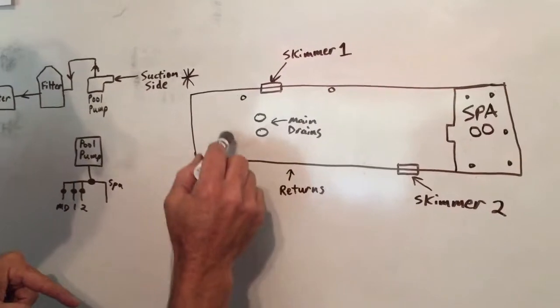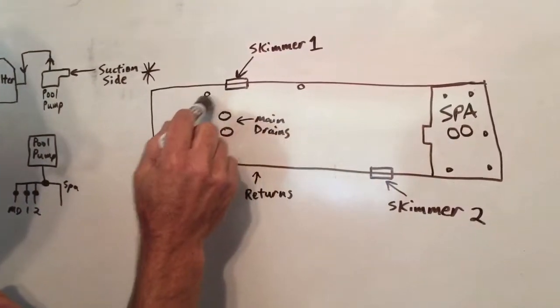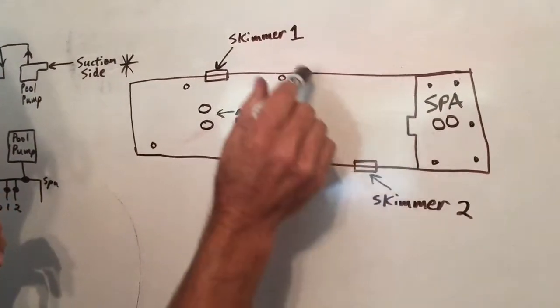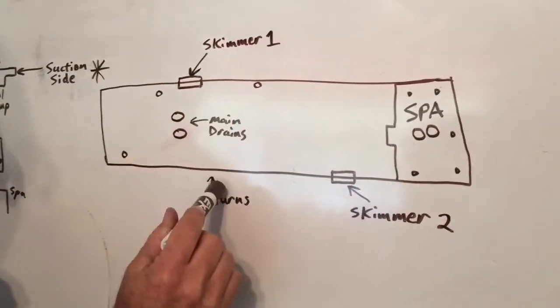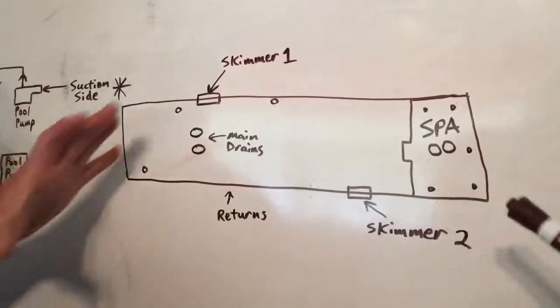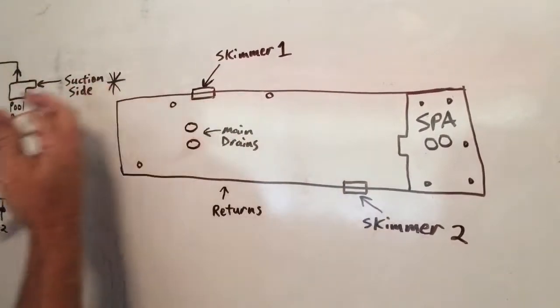And then you have the return fittings. Those are the little things that look like little eyeballs on the sides of the pool that are called the return fittings. We'll talk about that in just a sec. So let's think about how the water is flowing, pulling from the pool.